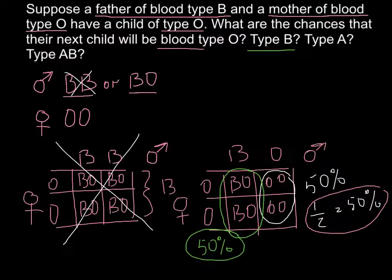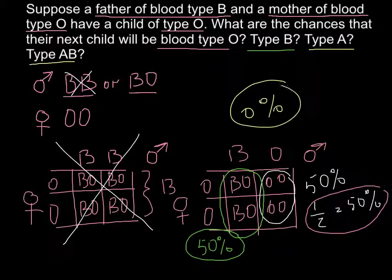And this was the answer for the first question here, so I'll highlight it. And the next two questions: what are the chances to have type A for any following child and type AB? As you see here, there is no possibility - only the progeny can be blood type O or blood type B. So we can put a zero possibility for these two questions.